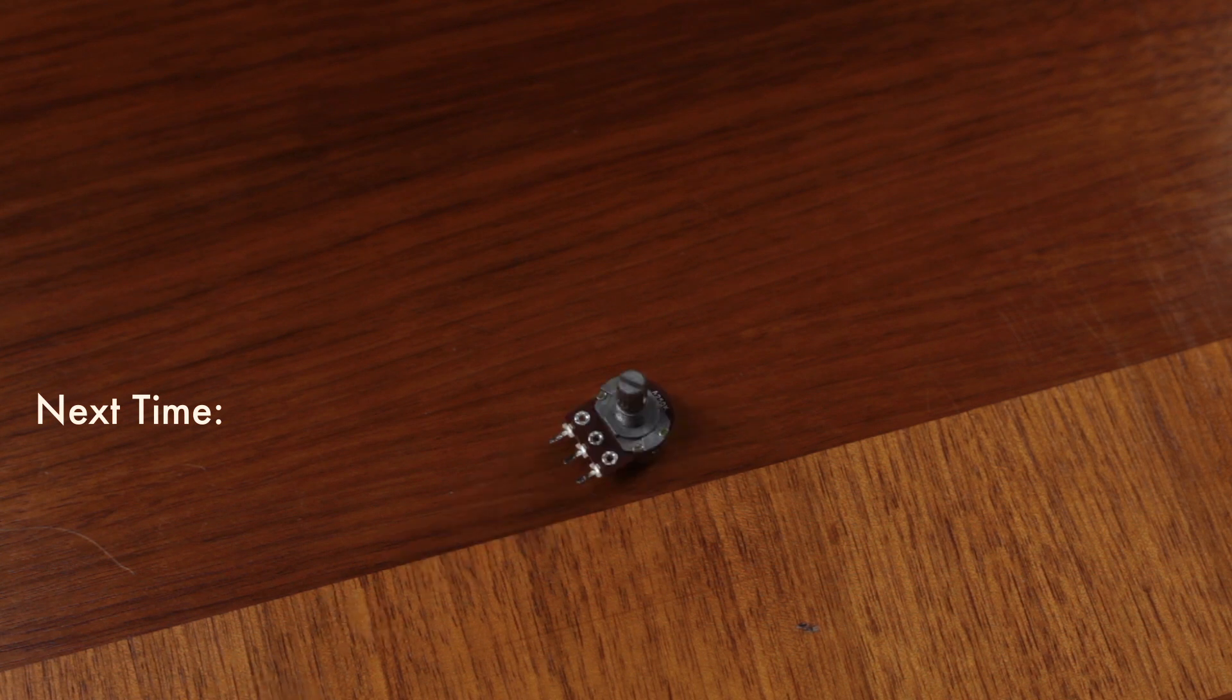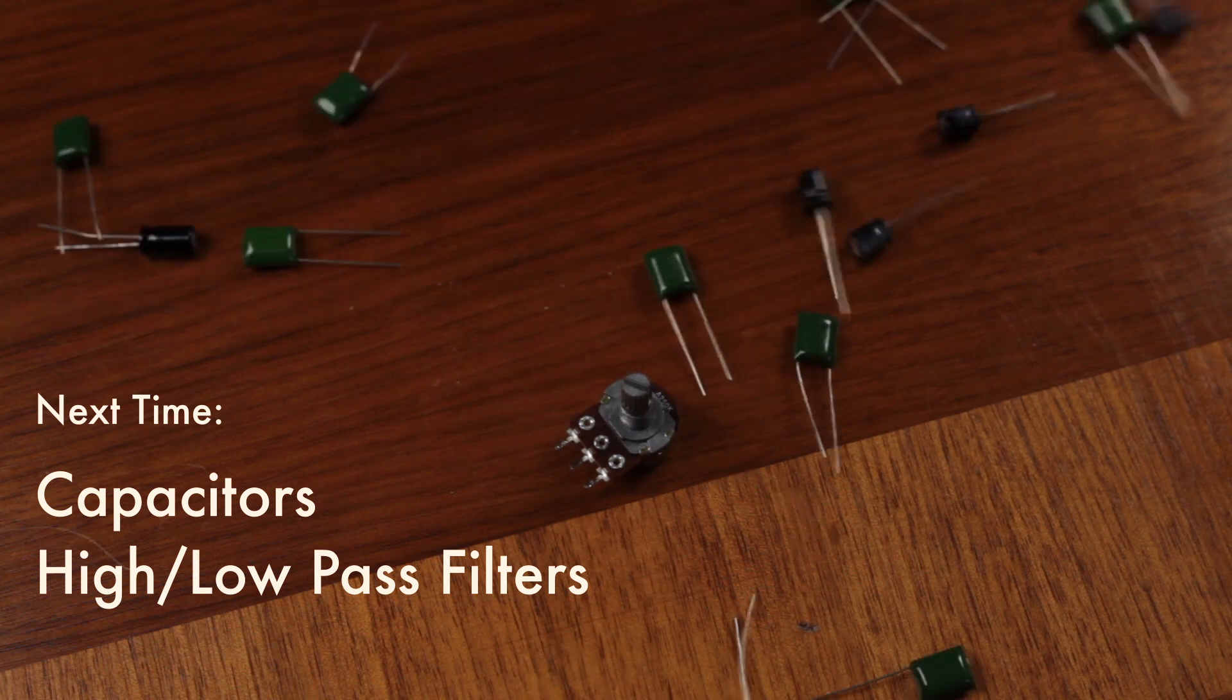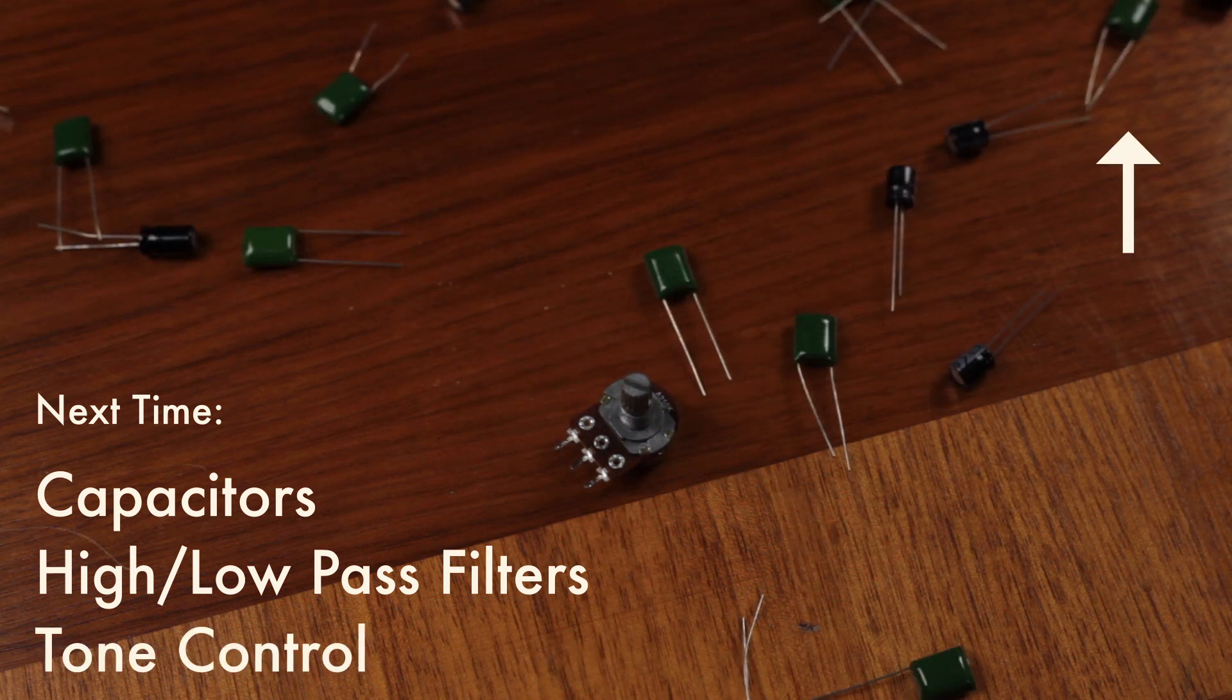Next time we'll put our knowledge of pots to use, learn about capacitors, high and low pass filters and we'll build a tone knob.